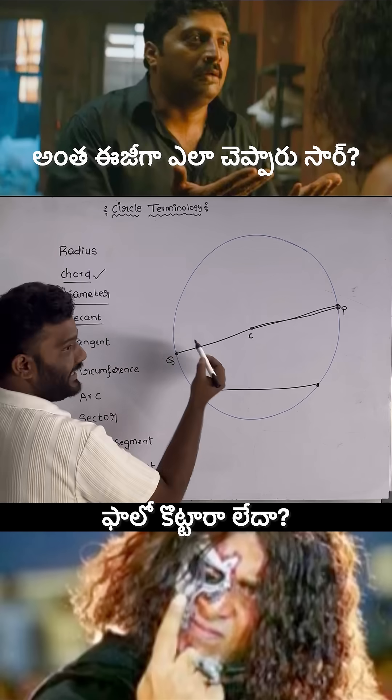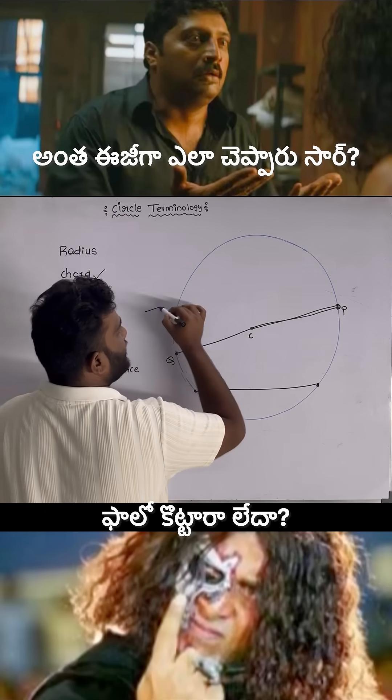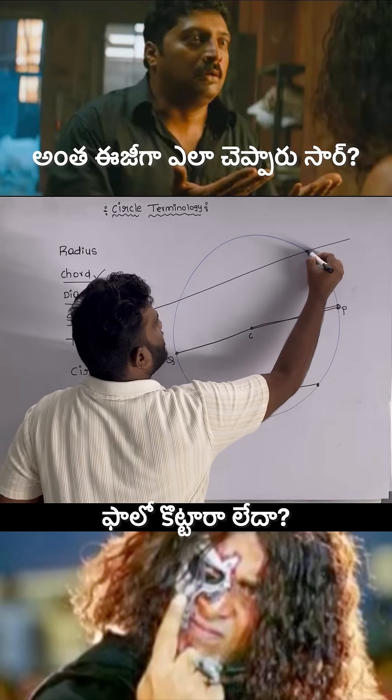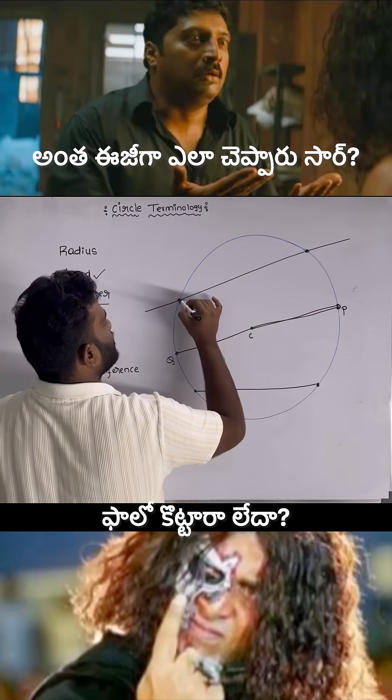Secant: it is a line which intersects the circle at two distinct points.